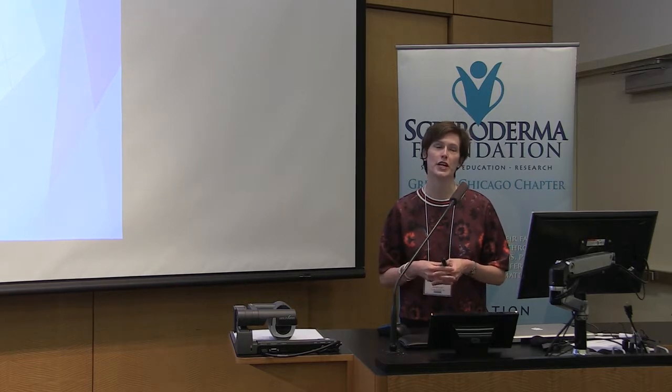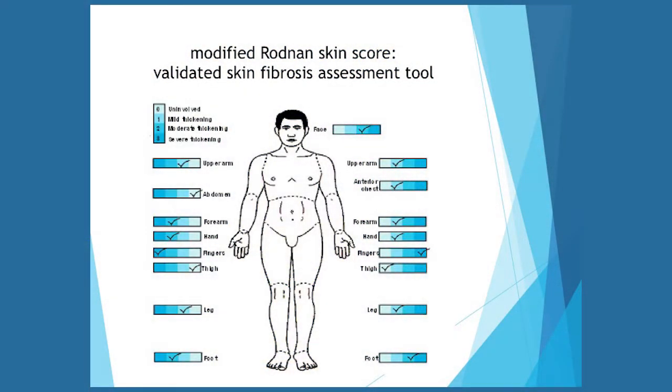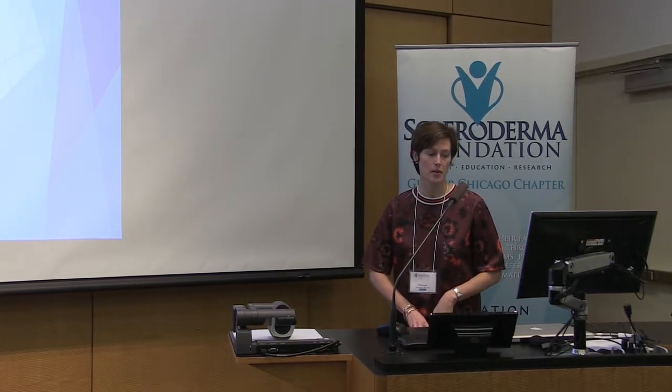Currently we measure skin disease by pinching the skin with our thumbs on 17 areas of the body. We pinch the 17 areas and come up with a score, with a total possible score of 51. Zero is normal skin where you can easily pinch and hold the skin. A score of three is when the skin is so thickened that you can't pinch any skin at all — that's the most severe thickness. We track this in the computer each visit to monitor whether skin disease is progressing or regressing.